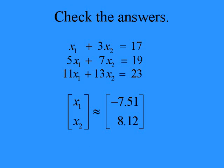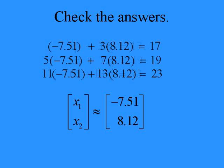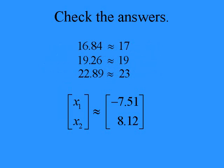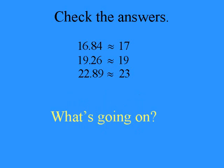It's always a good idea to check the answers, so we take the original set of equations and plug in the values for x1 and x2. Just plug the numbers in explicitly and add things up. But when we add things up, we don't get exactly the answers we're looking for. Well, what's going on?